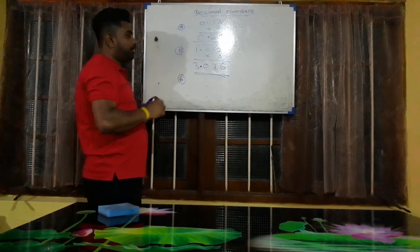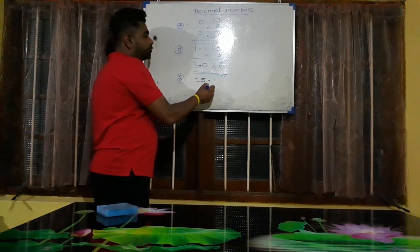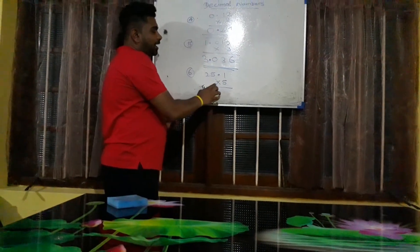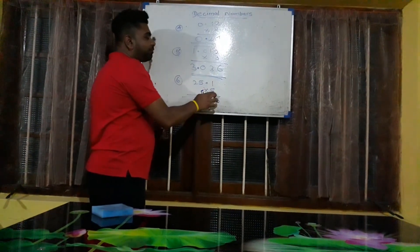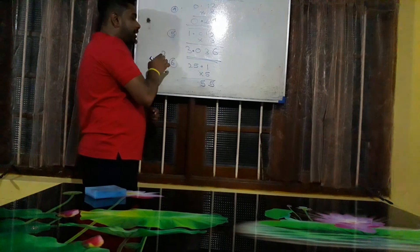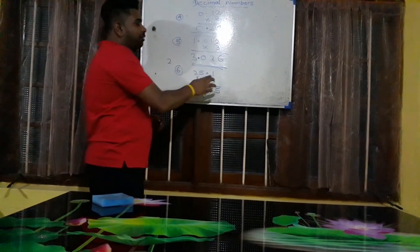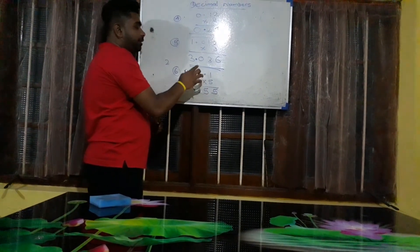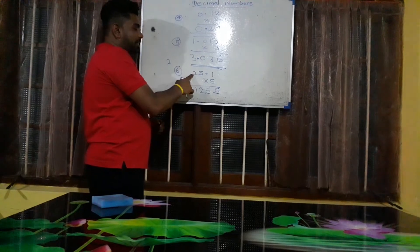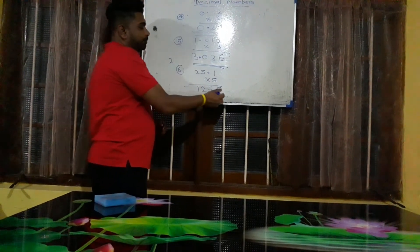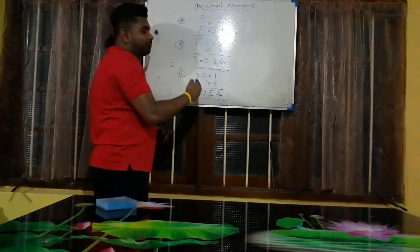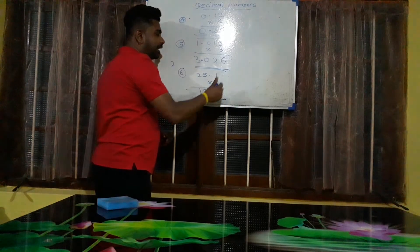Last example: 25.1 multiplied by 5. Multiply normally: 5 times 1 is 5. 5 times 5 is 25, write 5 carry 2. 5 times 2 is 10, plus 2 is 12. After the decimal point in 25.1 there is one number. So from the answer, separate one digit and keep the decimal point. The answer is 125.5.